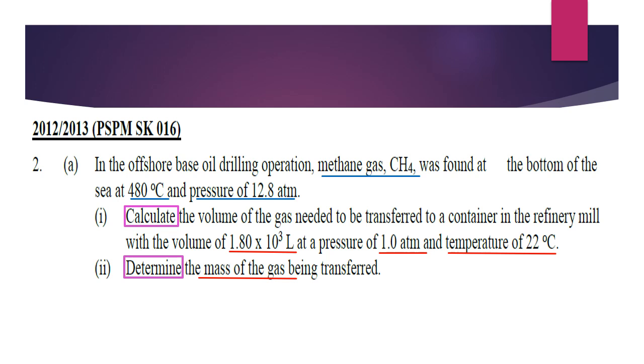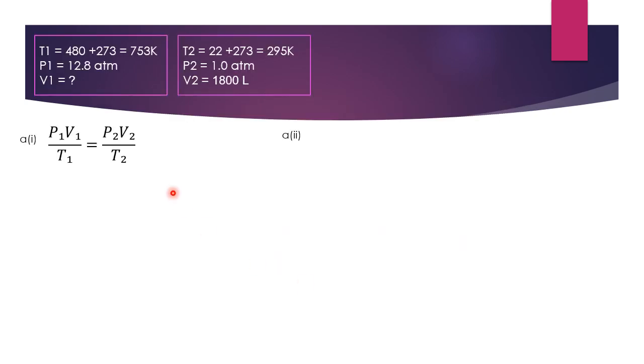So for A1, we need to apply a formula which combines Boyle's Law and Charles's Law. But before that, you have to identify what is T1, P1, and then the question needs us to find V1, and the T2, P2 and V2. Make sure all the units are correct. For example, temperature must be in Kelvin, pressure in atm, both of them are the same. And then volume in this case is in liters. So substitute and then you get the answer, 359 liters.